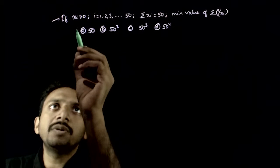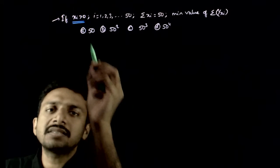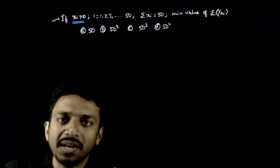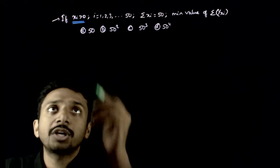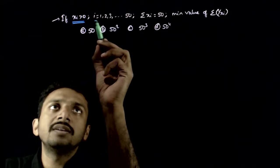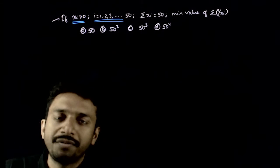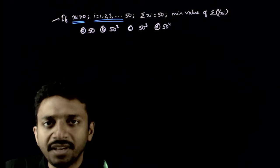Welcome students. So this question I have given you. There are some Xi's - X1, X2, X3 and so on. We have Xi's which are all positive and i is going from 1 to 50. That is, you have 50 numbers.